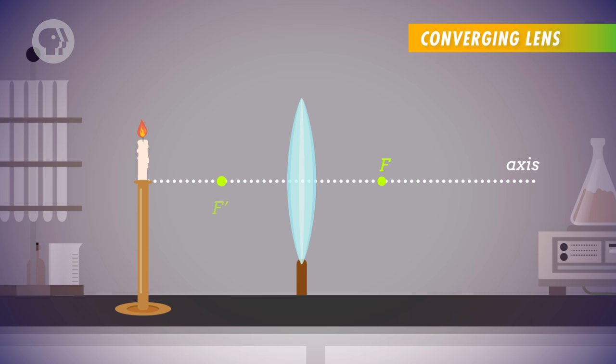So let's draw a ray from the top of the candle, reflecting through the lens, and then passing straight through the focal point F.